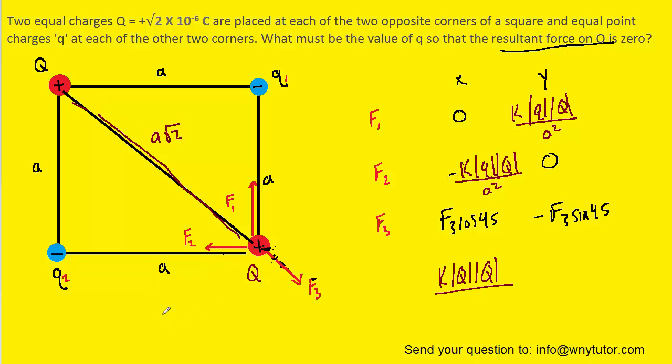And that's true of any square. Whenever you have a square, whatever the distance of each side of the square is, the diagonal will always be D radical 2. And that can be proved using the Pythagorean theorem. For now, we'll take it for granted and we'll note that the distance for the F3 force is A radical 2. And then we'll square it.